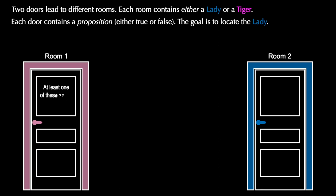For this puzzle, room one says at least one of the rooms contains a lady, and room two says a tiger is in the other room. For this particular puzzle, we are told that the truth values of the two doors are identical. They match.